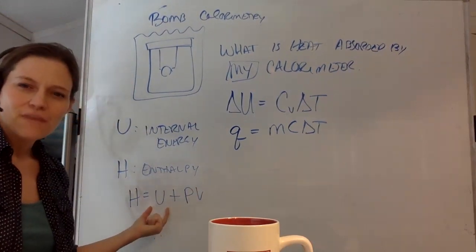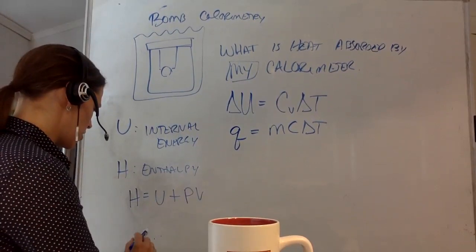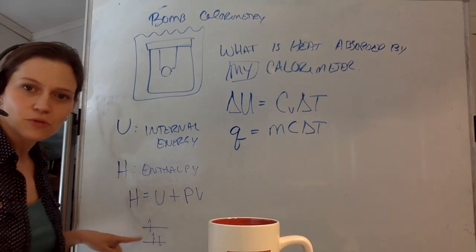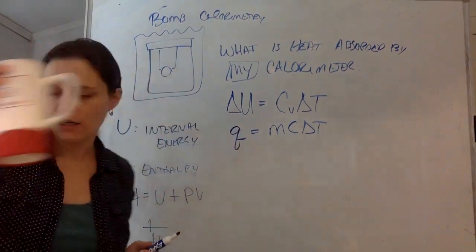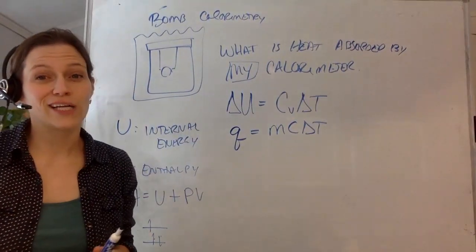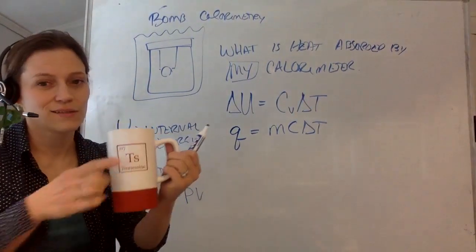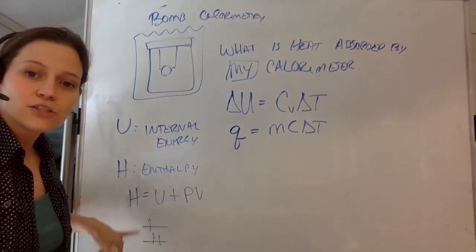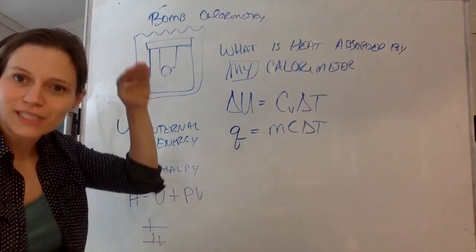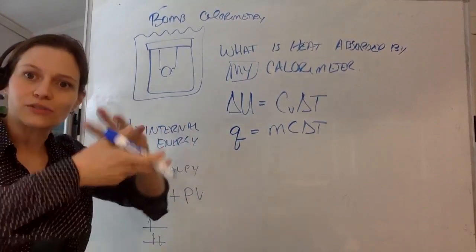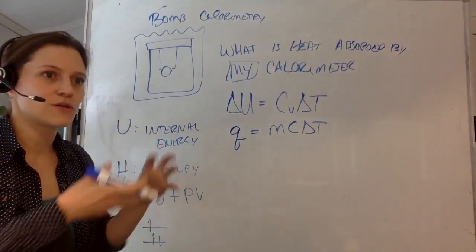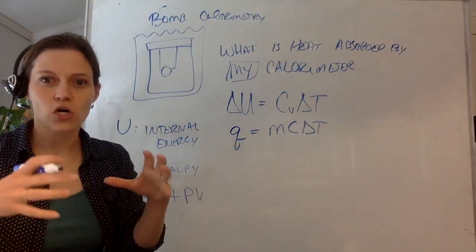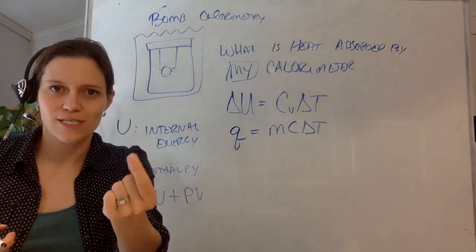Internal energy — if you think back to when you represent electronic states with little electrons, those little lines represent an energy. These energies represent the quantum states of those electronic energy levels. Then you've got the bonds — there's going to be energies associated with those, and the nuclei. There's energy associated with the nuclei. We lump all of those together and say that's all the energy that's internal to the molecule itself.